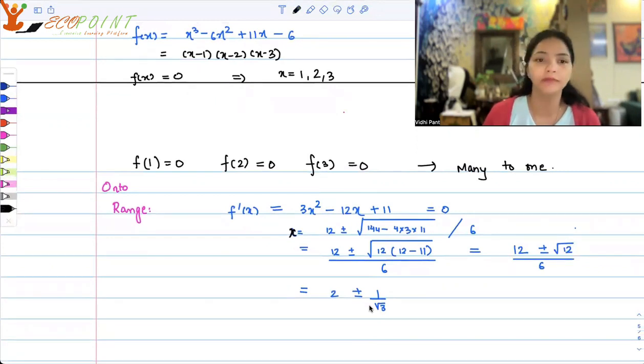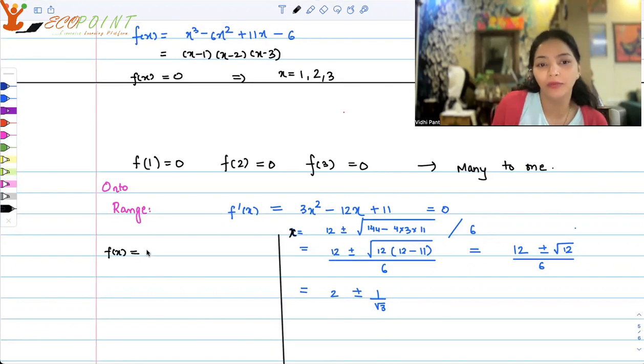If you find this cumbersome, the easier way to analyze this might be just by looking at the expression of f(x). So your f(x) is equal to (x minus 1)(x minus 2)(x minus 3).